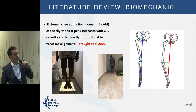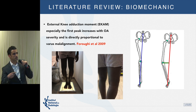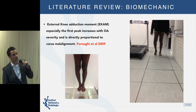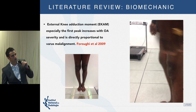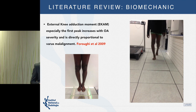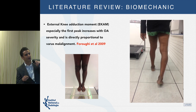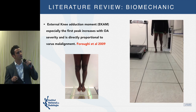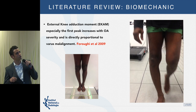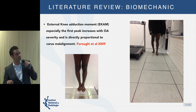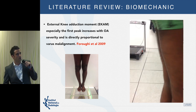Here you can see a patient with varus malalignment. Looking at the right lower limb, you can see that initially there is a varus malalignment, but what is important to notice is that there's a lateral laxity of the joint — a lateral translation visible during walking. The EKAM represents the varus malalignment in motion, not only in the static situation.